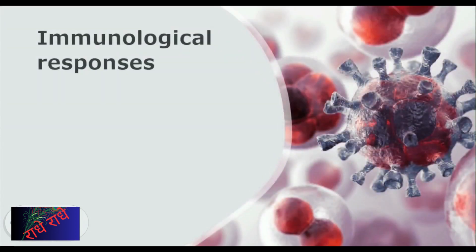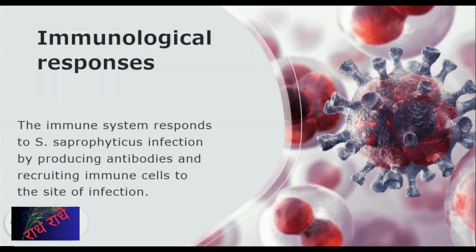We can see the effects of Staphylococcus saprophyticus infection on blood cells in this slide. When an infected cell is present, the body produces antibodies to combat the infection. The immune system also deploys immune cells to the site of infection in order to restrict the growth of the bacteria.